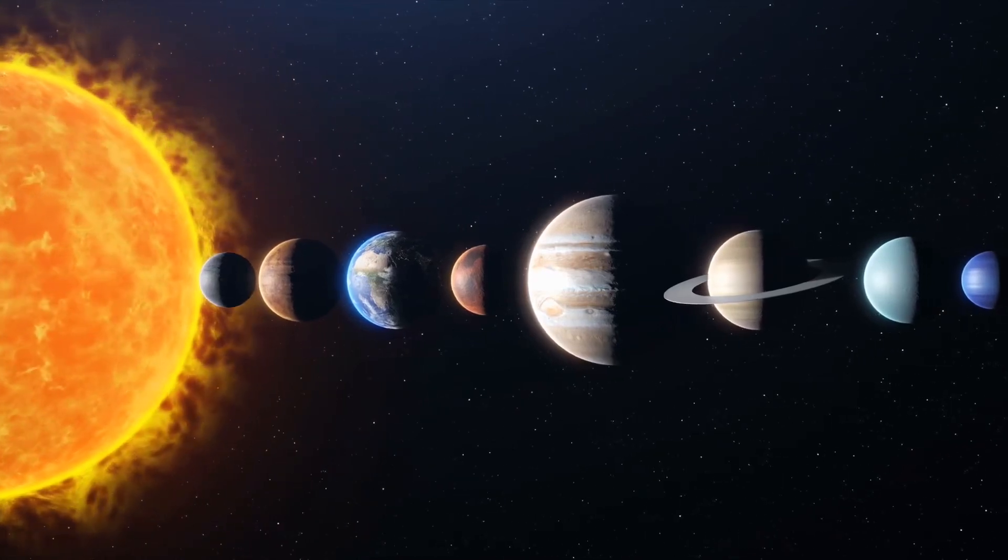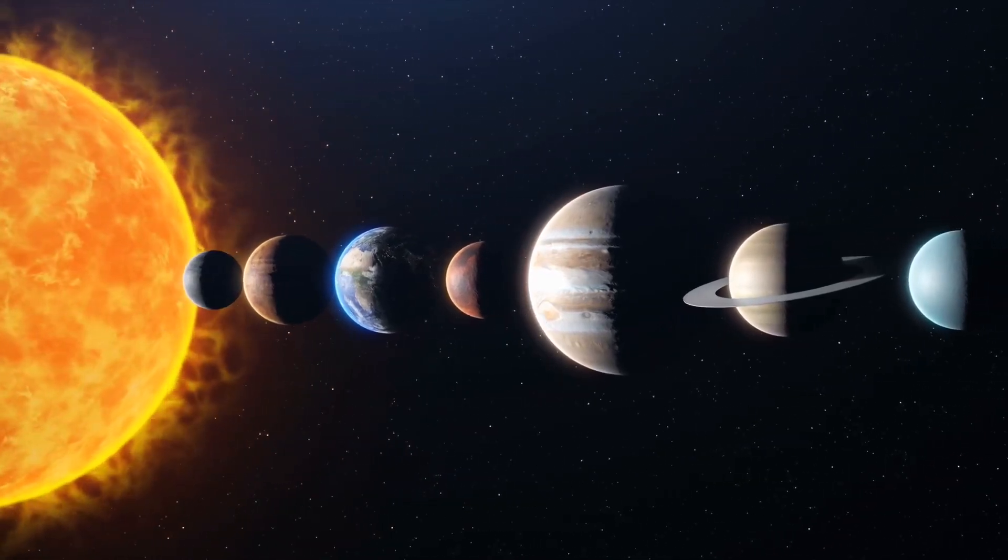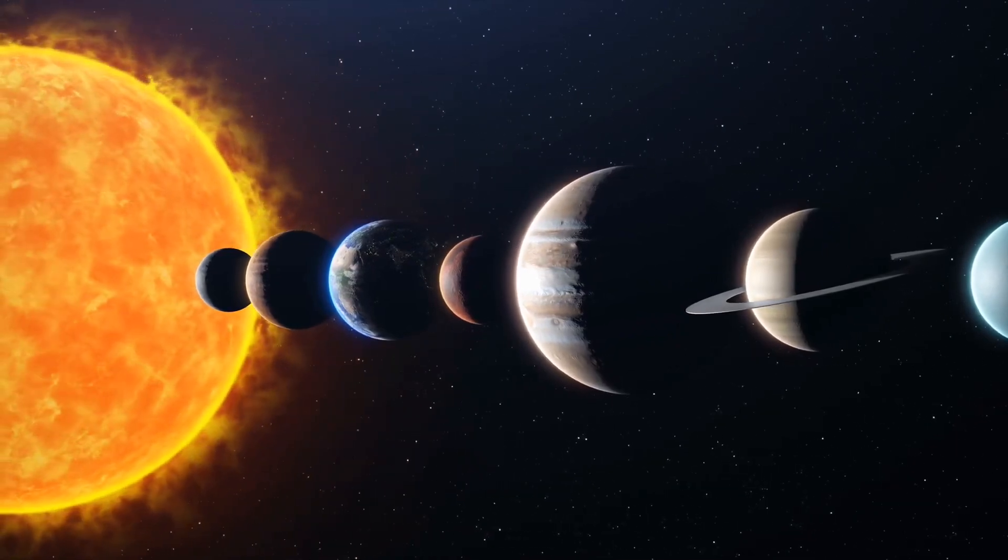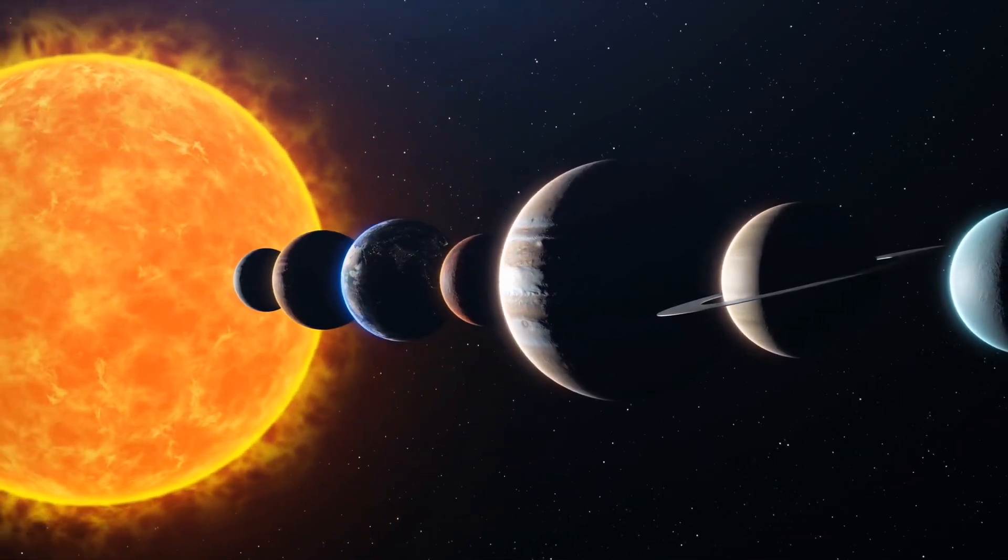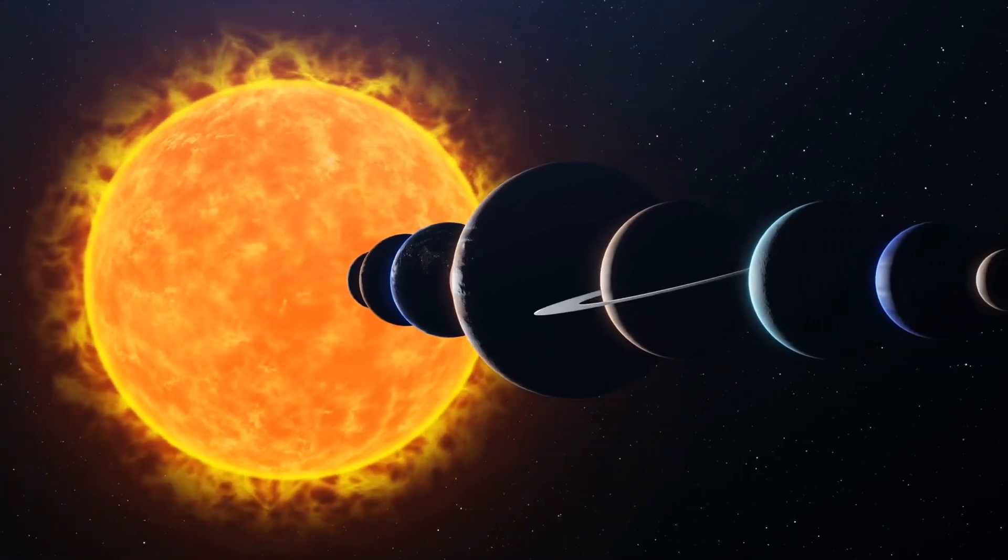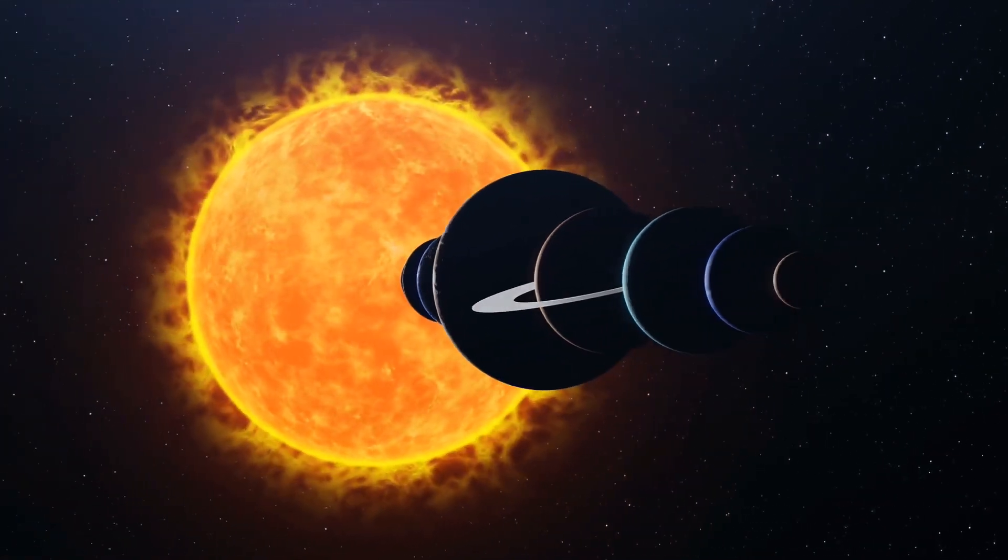The solar system is a fascinating place that includes the sun, eight planets and many other objects like moons, dwarf planets, asteroids and comets. It's like a big family of objects that are all connected by gravity.